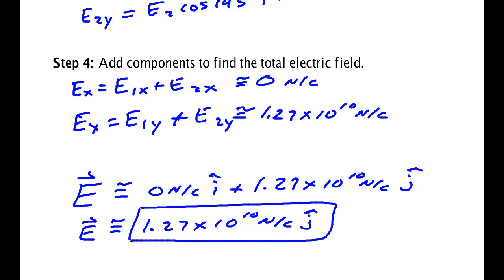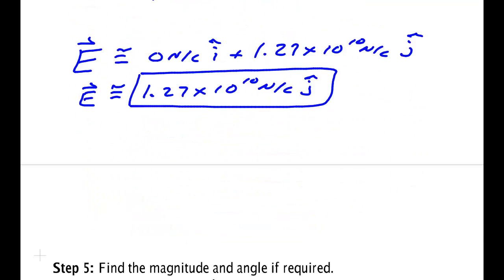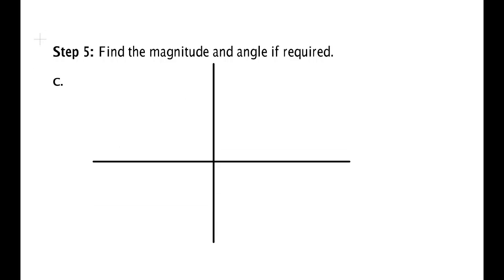Now in this case, to find it in polar form is really simple because it lies along one axis. You would take your vector and draw it. Here it is, 1.27 times 10 to the 10th newton per coulomb. So if you want me to write that in polar form, the electric field is 1.27 times 10 to the 10th newton per coulomb. Now you want the angle. The angle is measured with respect to the positive x-axis. That's 90 degrees. So at an angle of 90 degrees.